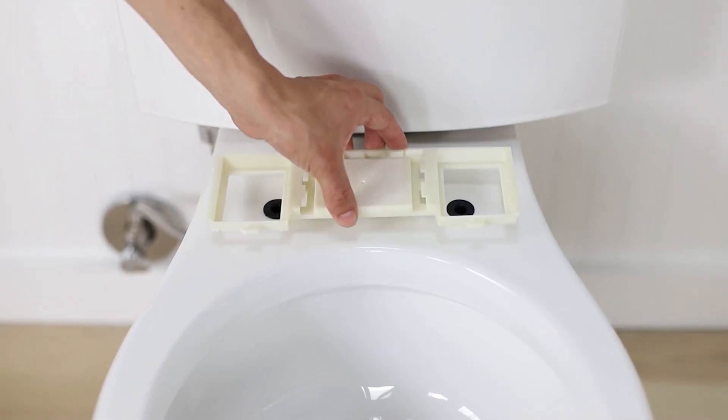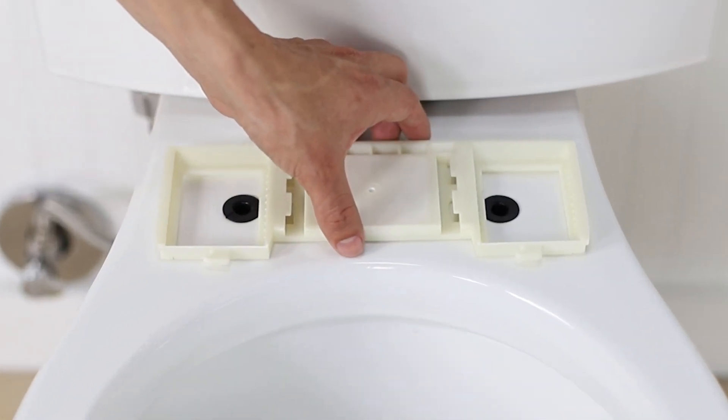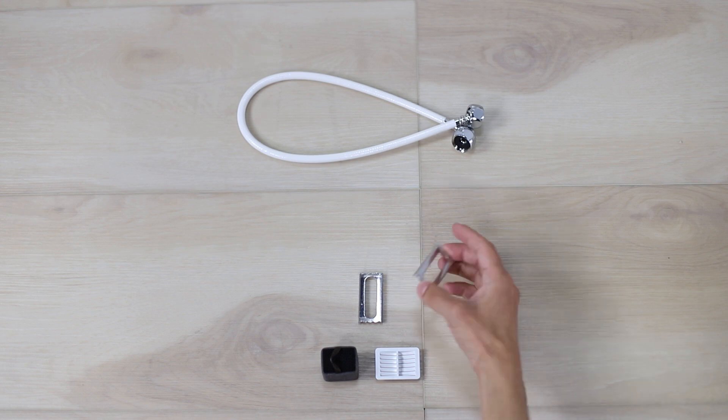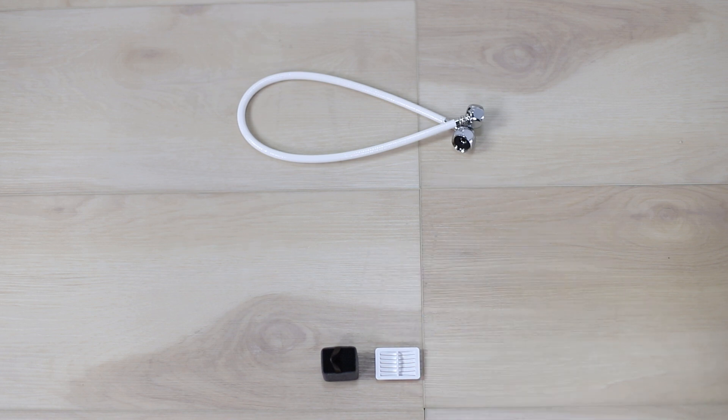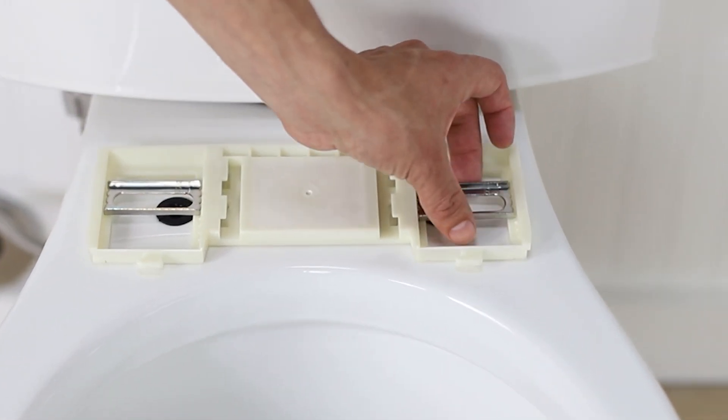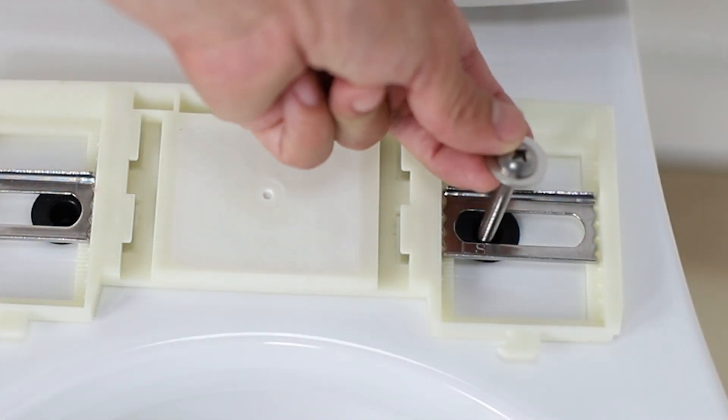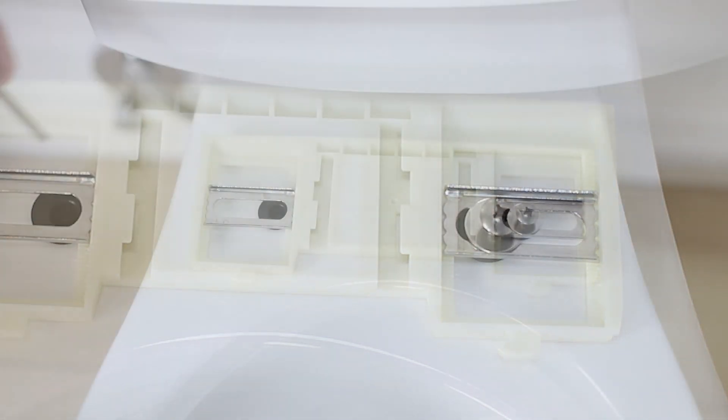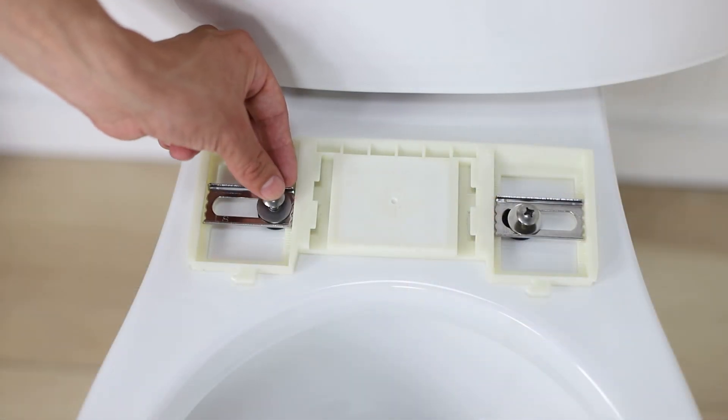Place the mounting plate over the rubber anchors on the toilet. Place the adjustable brackets flat side down on the mounting plate over the rubber anchors. Insert the washers and metal mounting bolts through the adjustable brackets into the rubber anchors.